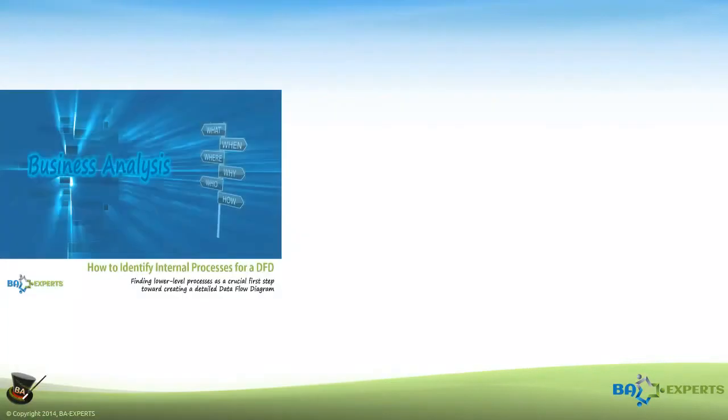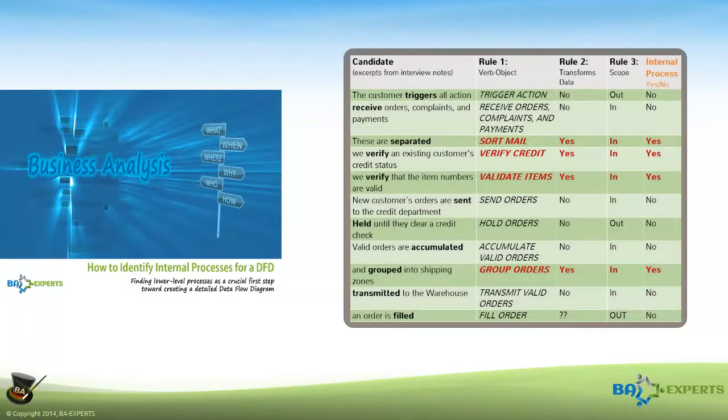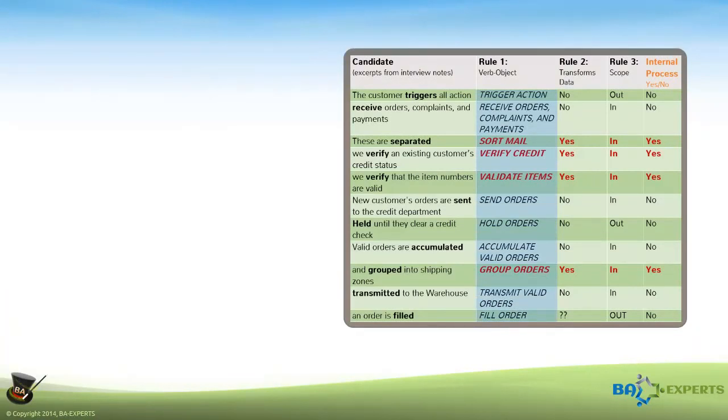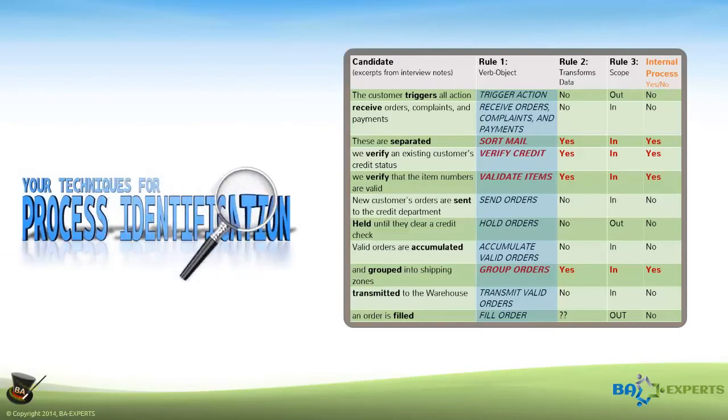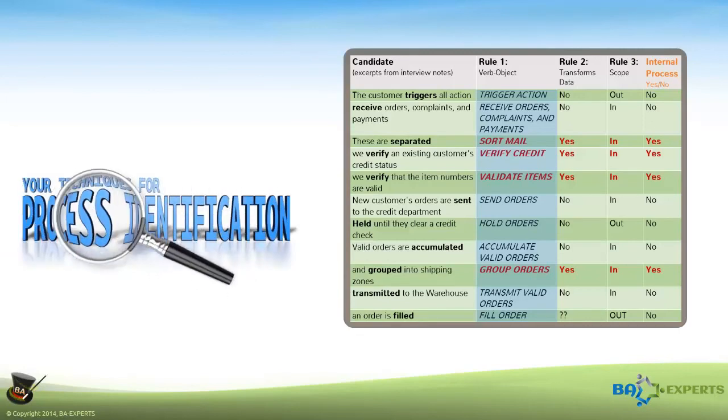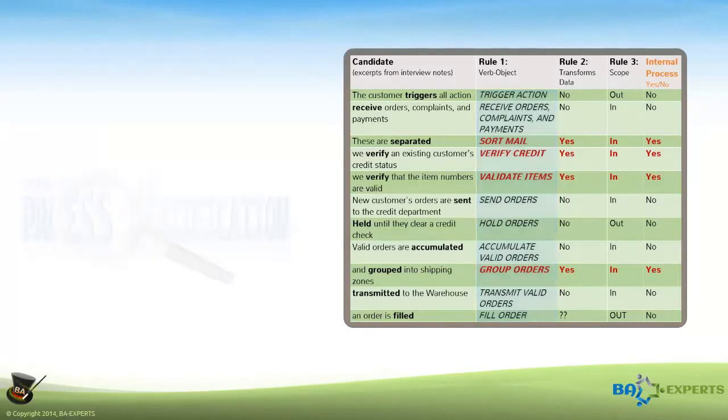In an earlier Knowledge Nugget, we showed you a technique for identifying potential internal processes that will be visible on a lower-level DFD. Applying this technique, or any other you come up with yourself, you should be able to recognize the following potential internal processes from the interview notes.